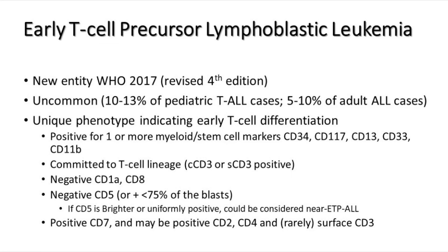ETP-ALL shows commitment to T-cell lineage through expression of either cytoplasmic or, less commonly, surface CD3. These cases are negative for CD1A and CD8. For CD5, these leukemias can be either negative or have less than 75% of the total blast population positive. If brighter or uniform CD5 expression is present, the case could be considered near-ETP ALL.